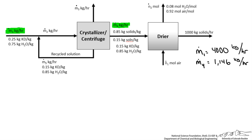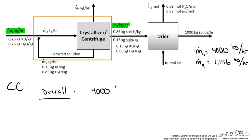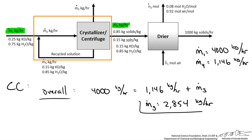At this point we could do a degree of freedom analysis on the mixing point, the crystallizer centrifuge, the dryer, or the overall balance. Sometimes it is nice to step back and figure out what we are missing. If we look at the crystallizer and centrifuge, the only unknown is M3 — we can take out the recycle stream and do a balance around that area. We know what is coming in and what is leaving, so the only unknown is the water being evaporated. Doing an overall balance around the crystallizer centrifuge recycle stream area: 4000 kg/hr in equals 1146 kg/hr plus M3, giving M3 equal to 2854 kg per hour.